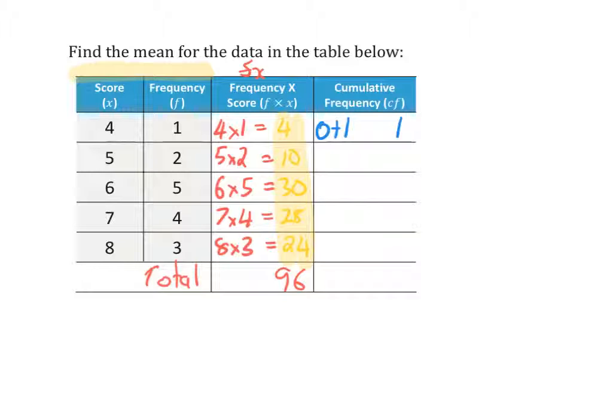Now I need to know what is my frequency at the end of my next score. So starting with the 1, 1 plus 2 equals 3. And I continue going down until I've reached my last score. So 3 plus the next frequency of 5 equals 8. 8 plus the next frequency of 4 equals 12. And then 12 plus the last frequency of 3 equals 15. And what the last number in the cumulative frequency column tells me is how many numbers in total I have in my data set.